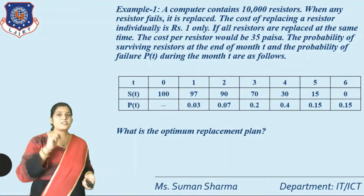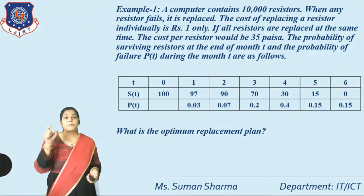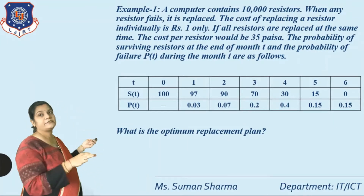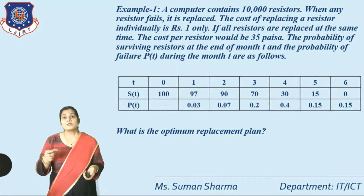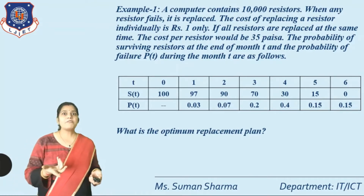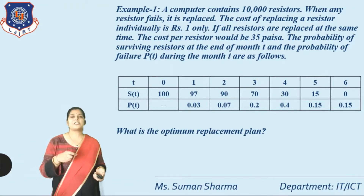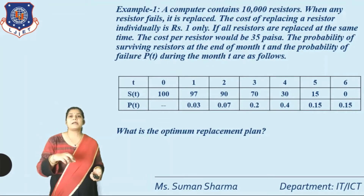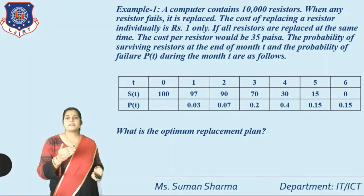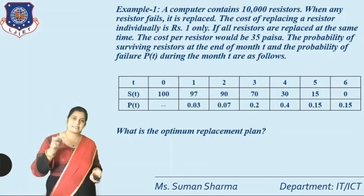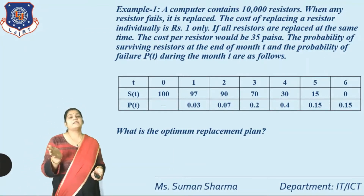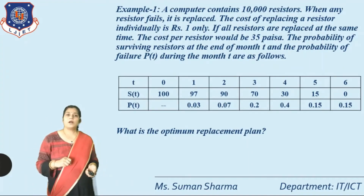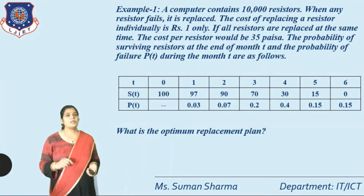Sometimes probability is not given in the question, so first you find the probability. When the question gives total registers and replacements, divide: put total registers in the denominator and the replacement registers one by one in the numerator. Here months are given as 0, 1, 2, 3, 4, 5, and 6.